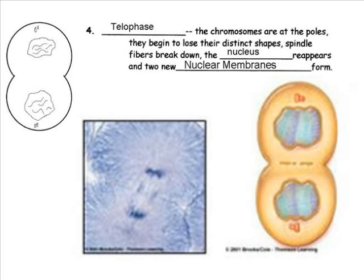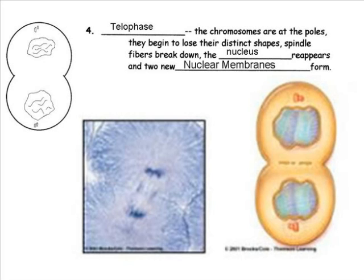During the last step of mitosis, which is telophase, the chromosomes are at the poles of the cell. They begin to lose their distinct shapes, spindle fibers break down, the nucleus reappears, and two new nuclear membranes form. At this point, mitosis is complete. Remember, mitosis is the division of the nucleus. Mitosis must occur first before the rest of the cell can divide.